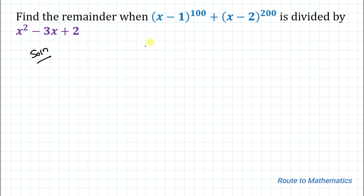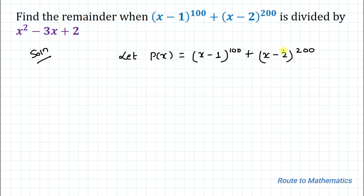We have the given polynomial — let's take it as p(x) equals (x minus 1) to the power 100 plus (x minus 2) to the power 200. The question is to find the remainder of this polynomial when it is divided by the divisor x squared minus 3x plus 2. Let's take g(x) as the divisor, that is x squared minus 3x plus 2. In the next step we are going to apply the Remainder Theorem.